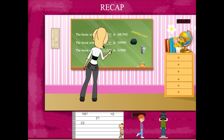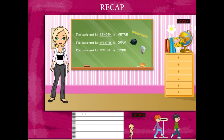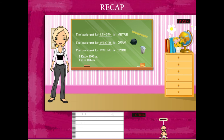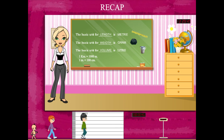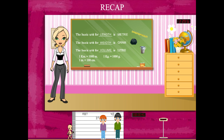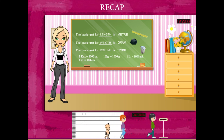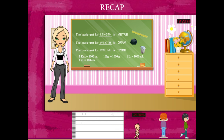Rosie ma'am revises further. 1 kilometer equals 1000 meters, and 1 meter equals 100 centimeters. 1 kilogram equals 1000 grams, and 1 liter equals 1000 milliliters.